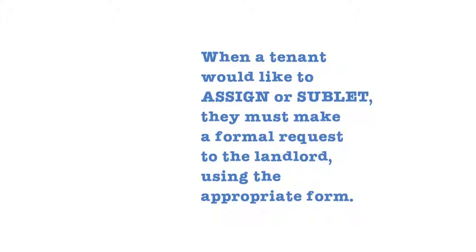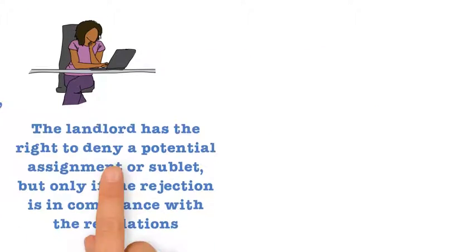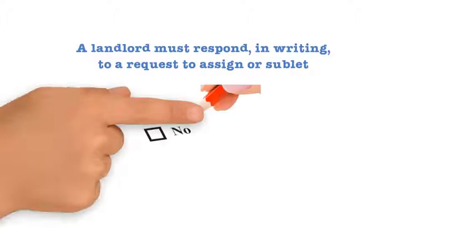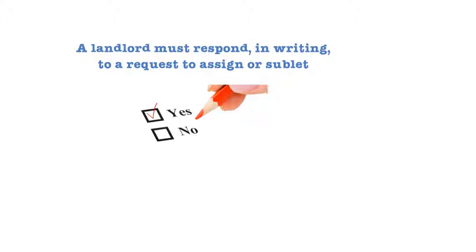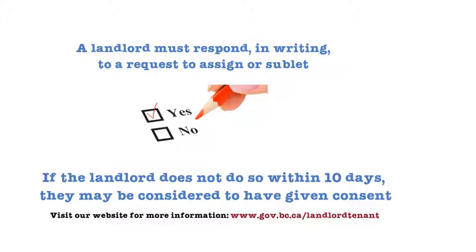When a tenant would like to assign or sublet, they must make a formal written request to the landlord using the appropriate form. The landlord has the right to deny a potential assignment or sublet, but only if the rejection is in compliance with the regulations. The landlord must respond in writing within ten days, or they may be considered to have given consent. The website has more information on assigning and subletting.